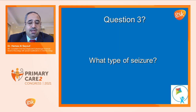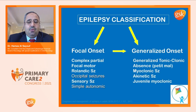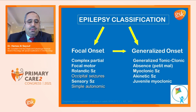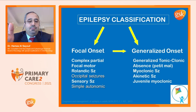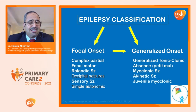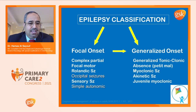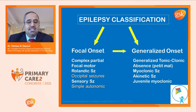Question three — what type of seizure. Classification: focal, meaning it starts in one part of the body (determined by clinical presentation or EEG), or generalized, meaning the abnormal discharge starts everywhere in the brain simultaneously. You can further divide them: complex partial, simple partial, focal motor, sensory, occipital. By the end of the day, focal is focal — we know what medication to use. Generalized is a totally different treatment approach.